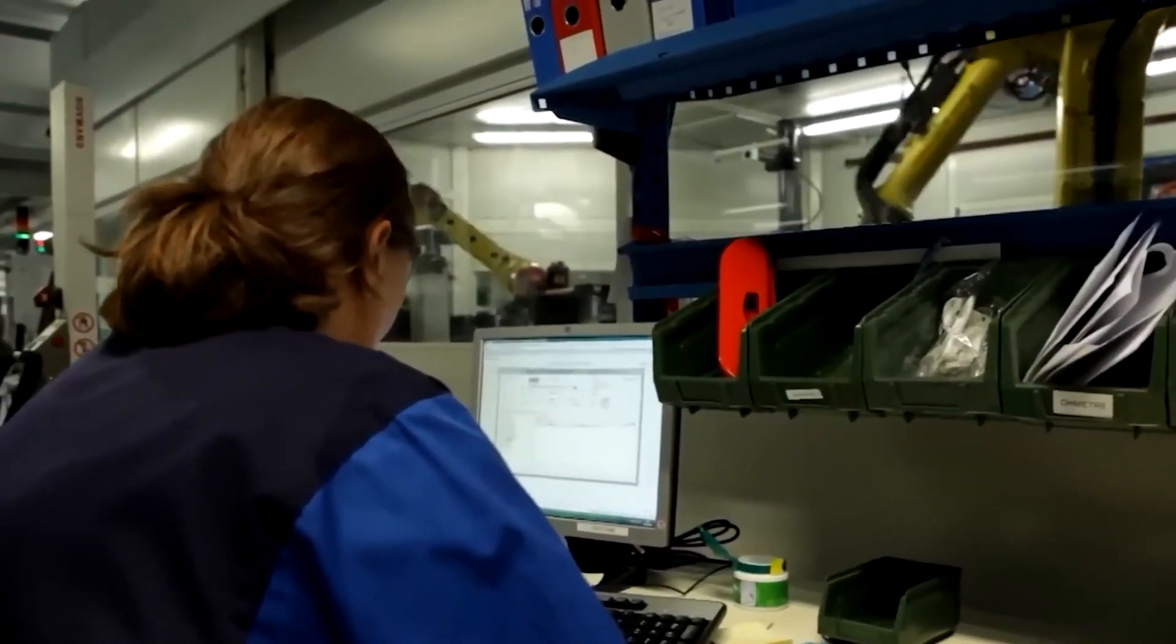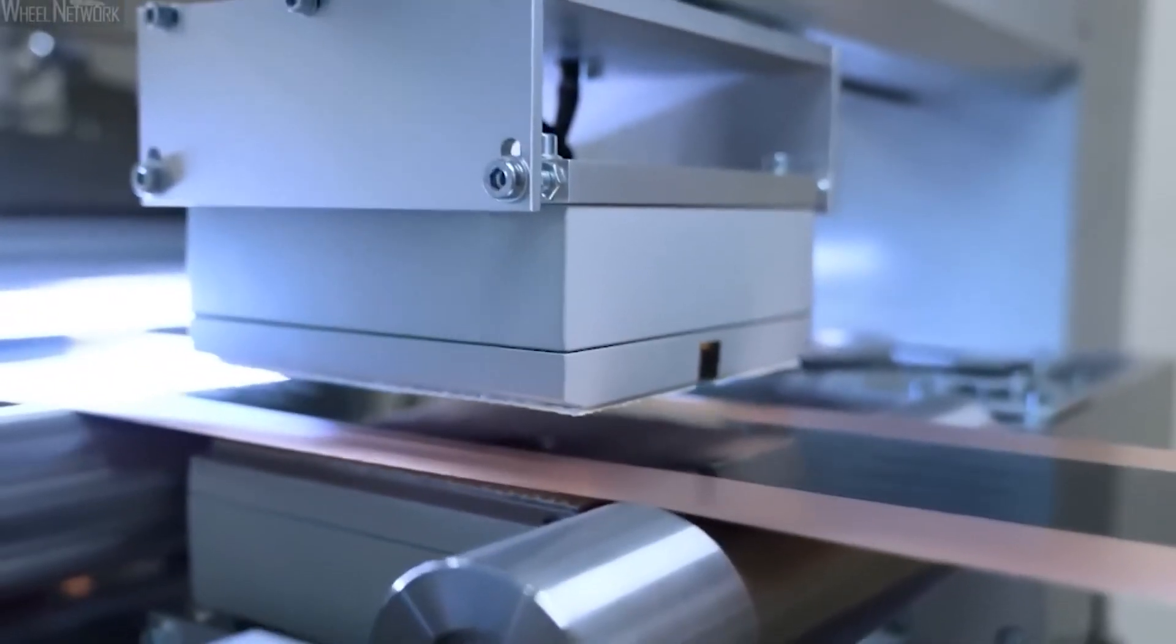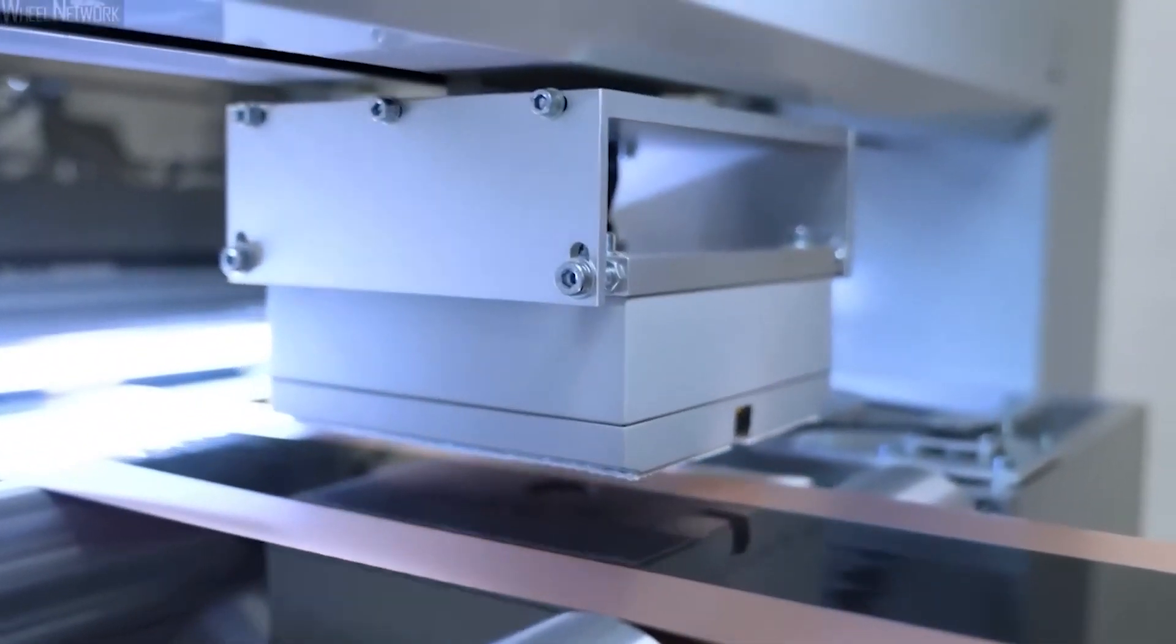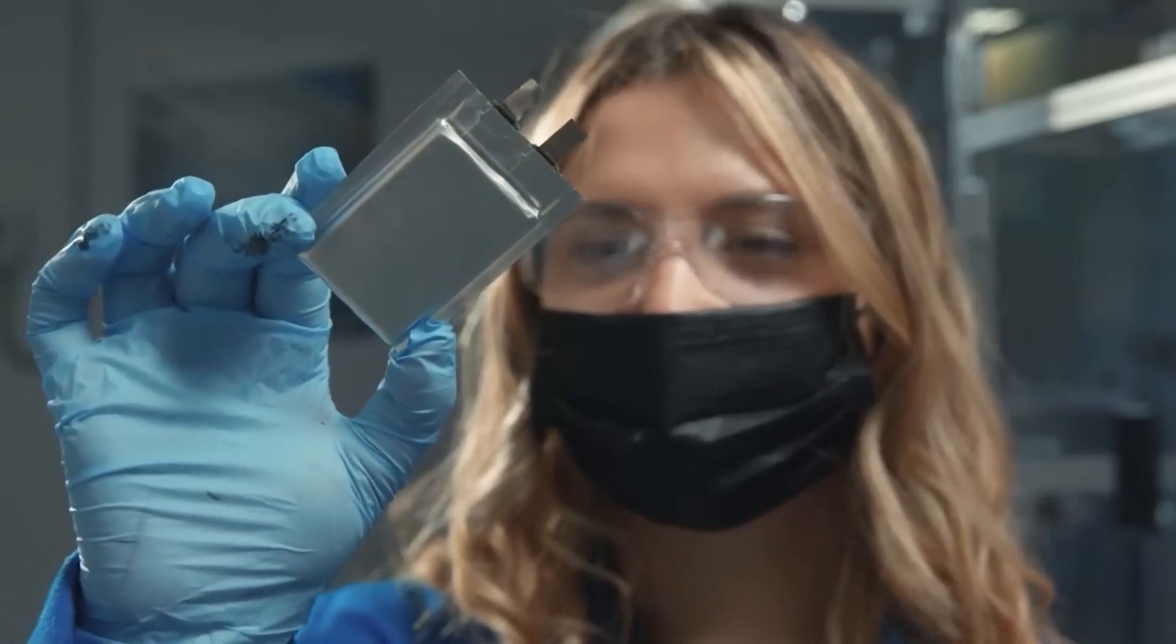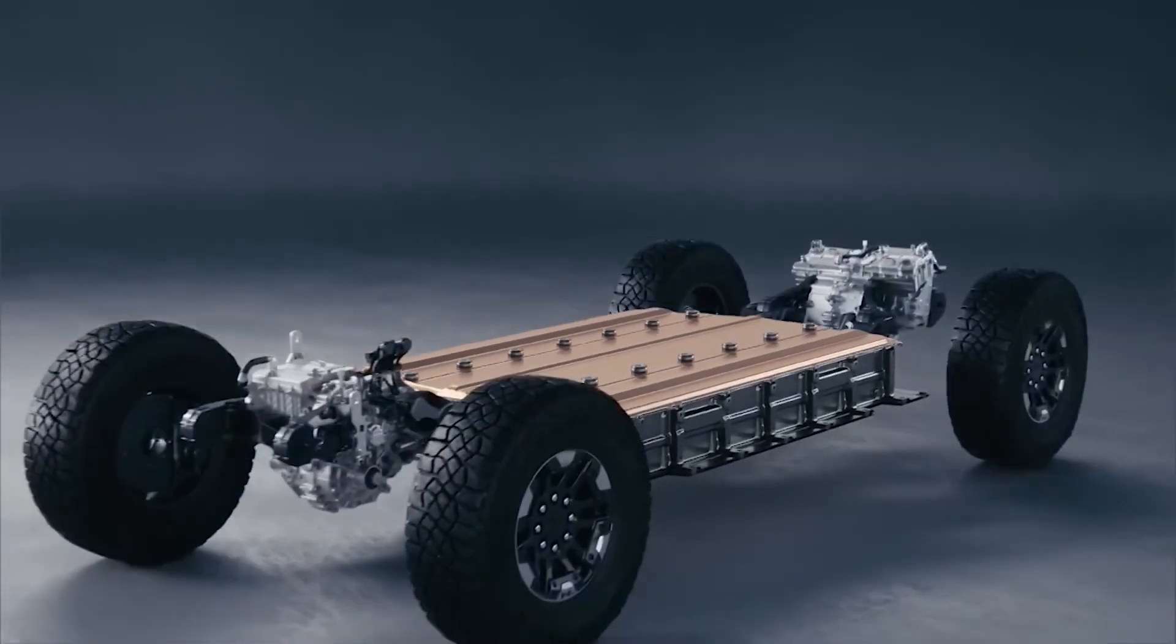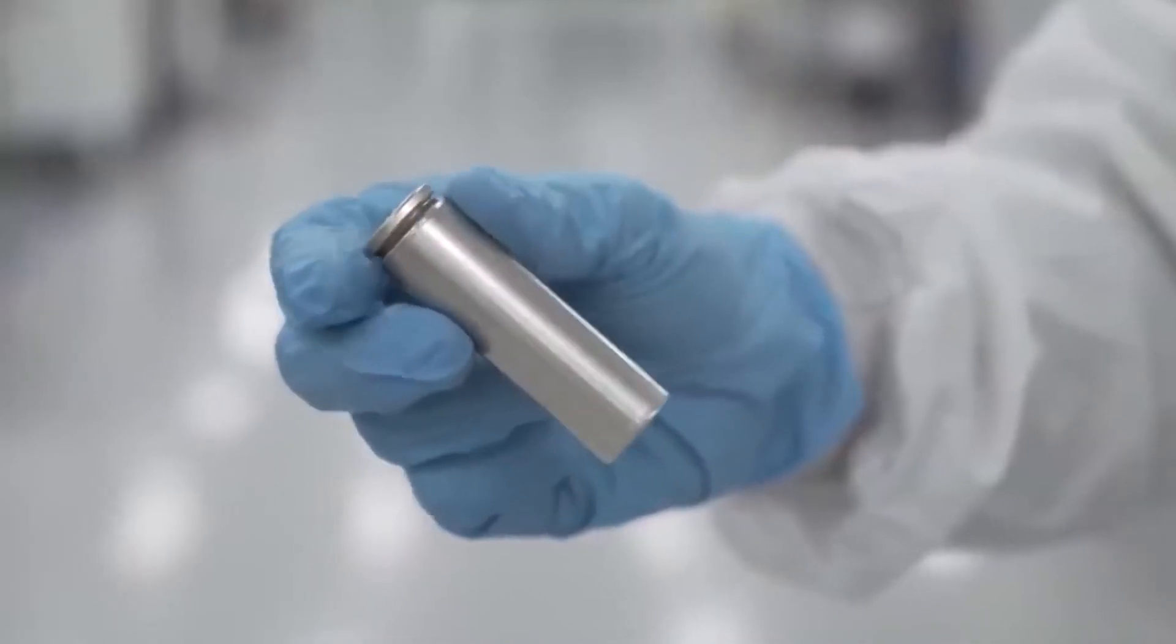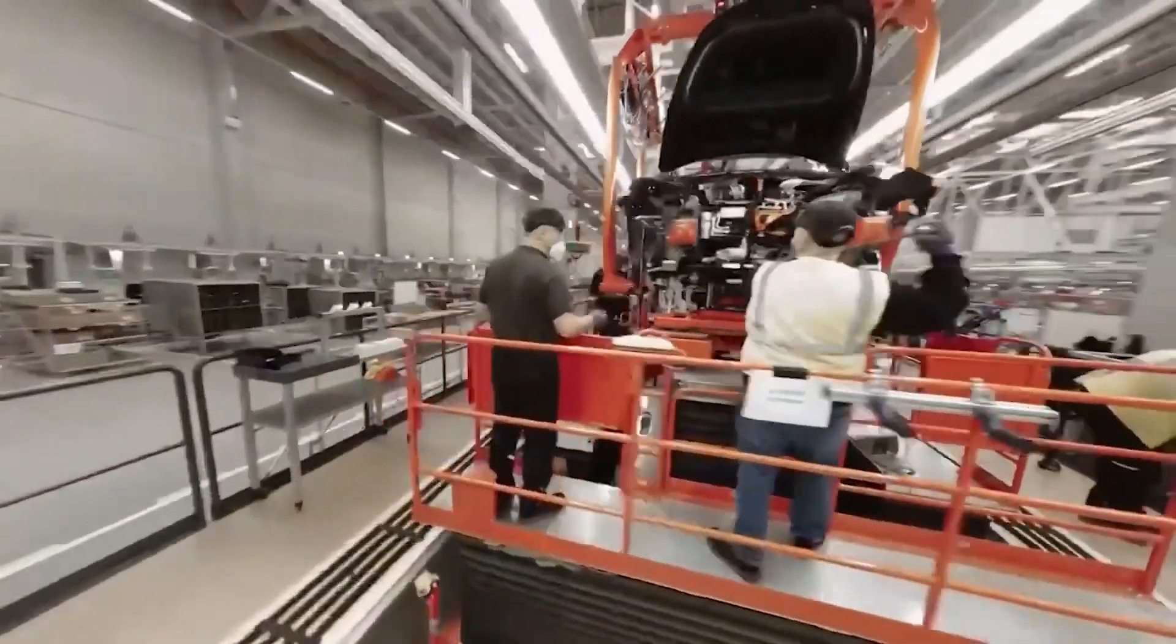Toyota will apply LFP technology to new BEV models using the bipolar structure battery found in the Aqua and Crown hybrids sold in the Japanese market. The company claims this will result in a 20% increase in cruising range and a 40% cost reduction over the existing BZ4X. Nickel-series bipolar lithium-ion batteries are also expected to be produced in a high-performance variant, which suggests that Toyota may produce low-cost, high-performance EVs in the future.